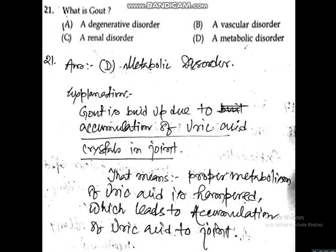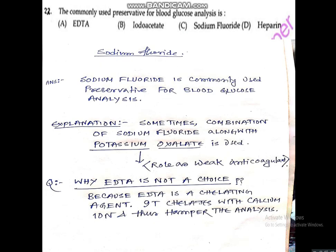In question number 21, they asked: what is gout? Options are: a degenerative disorder, a vascular disorder, a renal disorder, or a metabolic disorder. The correct answer is option D — it's a metabolic disorder. Gout occurs due to the accumulation of uric acid crystals in the joints, meaning proper metabolism of uric acid is hampered. That's why it's a metabolic disorder, not a degenerative disorder.